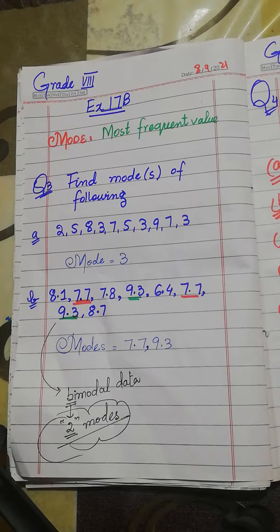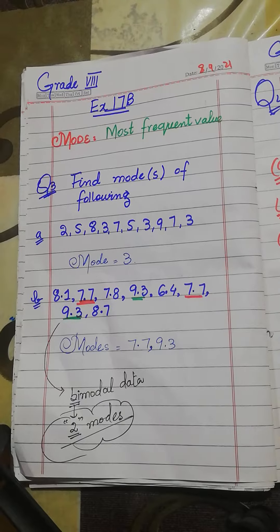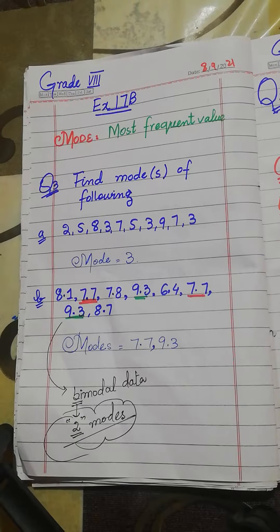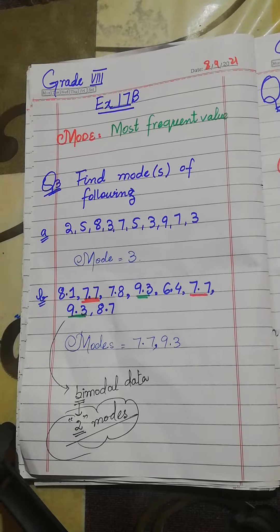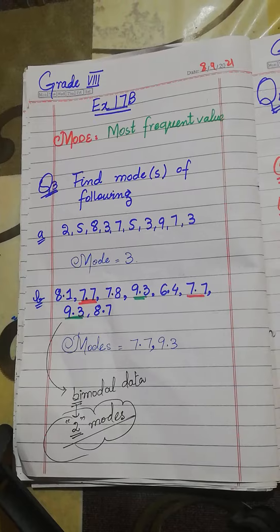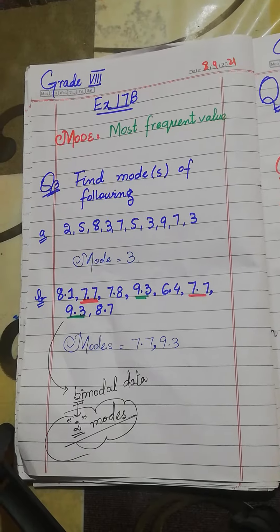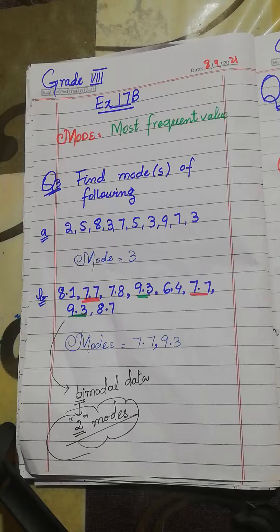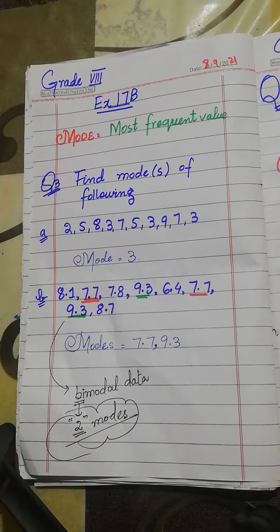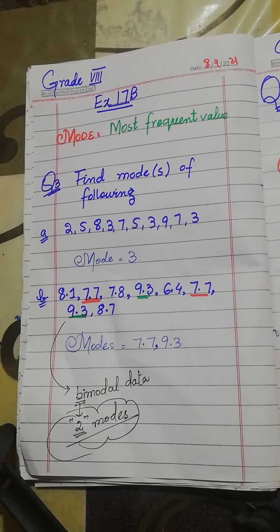Mode is basically the most frequent value in the data — frequent means the most repeated value. Question number 3 is: find the mode. Modes can be more than one, as we will see in the questions here.